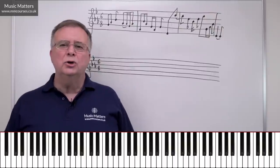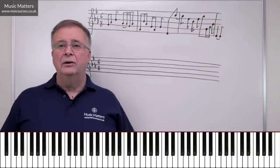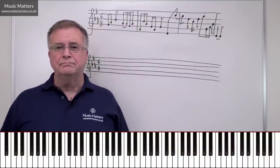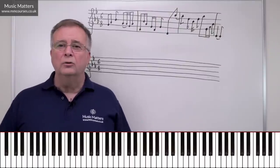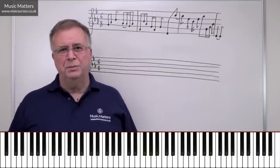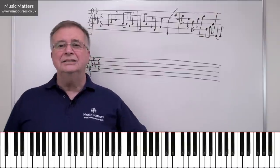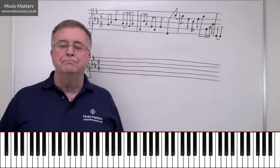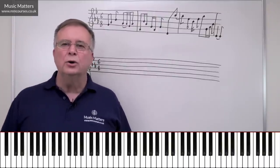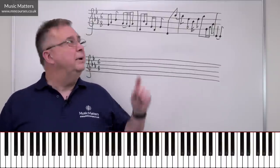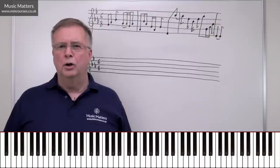The first thing is you need to be sure you understand your time signatures. We've got this thing called simple time and this other thing called compound time. If you need to know more about that, we've got resources at Music Matters to help explain all that. Basically, it works like this. If you've got two, three, or four as your upper number, you're in simple time. If you've got six, nine, or twelve as your upper number, then you're in compound time.